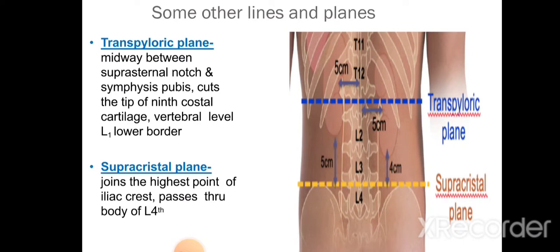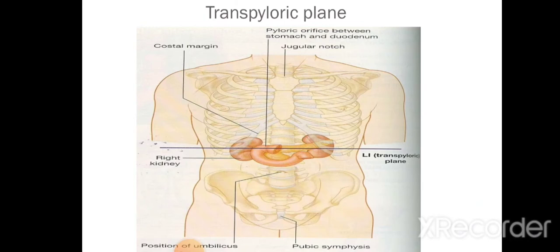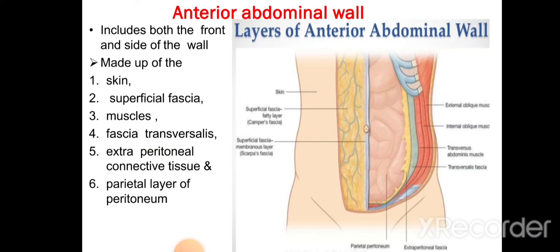Other planes of the abdomen include the transpyloric plane, which passes midway between the suprasternal notch and the pubic symphysis and cuts the tip of the ninth costal cartilage at the level of L1 vertebra. The supracrestal plane passes through the highest point of the iliac crest at the level of L4 vertebra. Structures at the transpyloric plane include the hilum of kidney, first part of duodenum, pyloric part of the stomach, neck of pancreas, formation of the portal vein, and origin of the superior mesenteric artery.